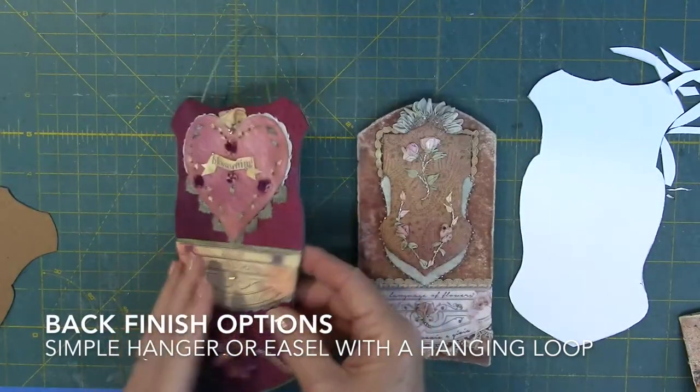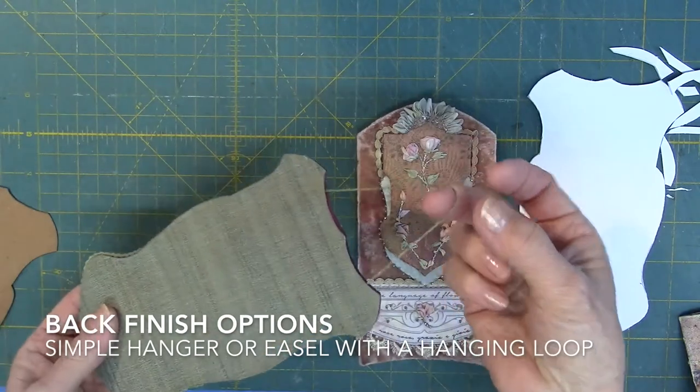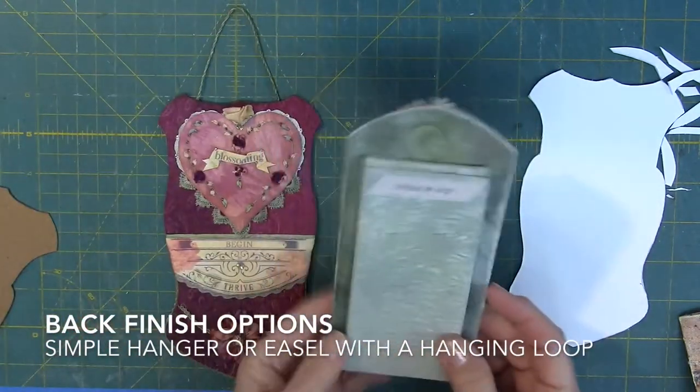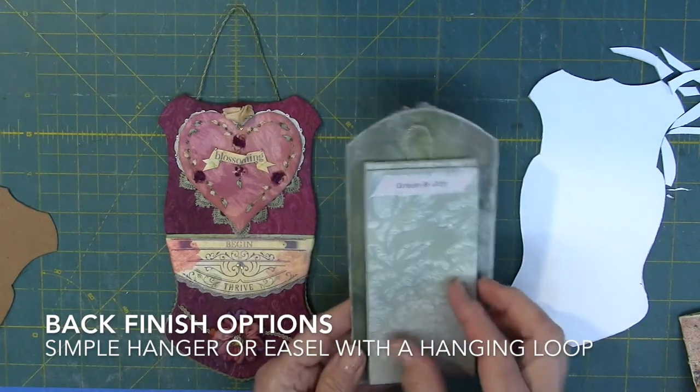There are two back finish options for each token. One is to attach a simple ribbon hanger, and the other is to make an easel stand, which also has a hanging loop.